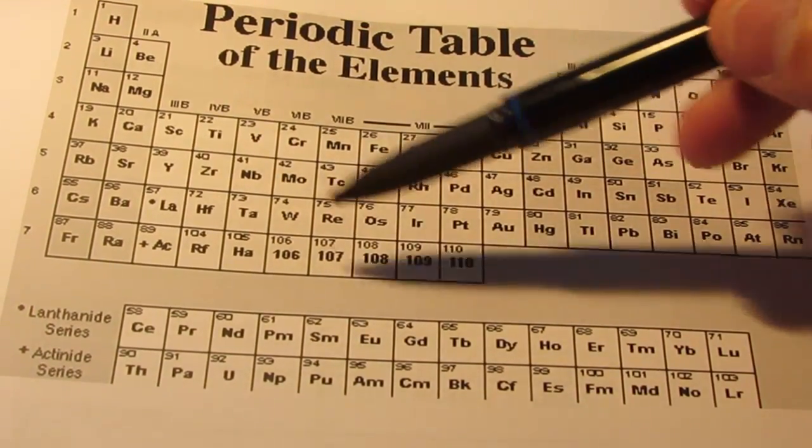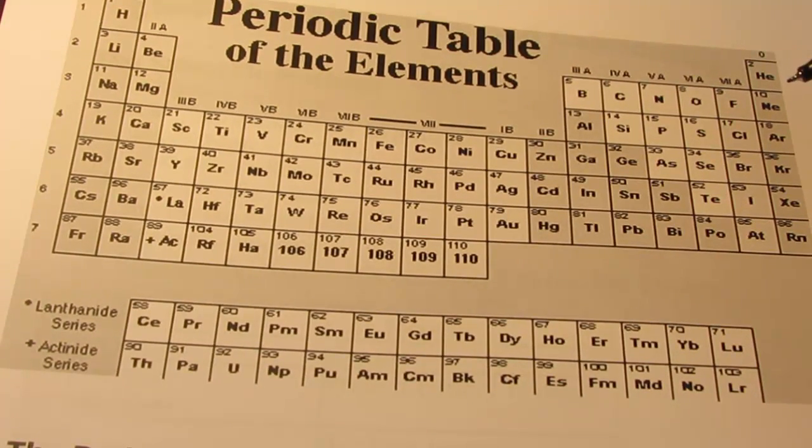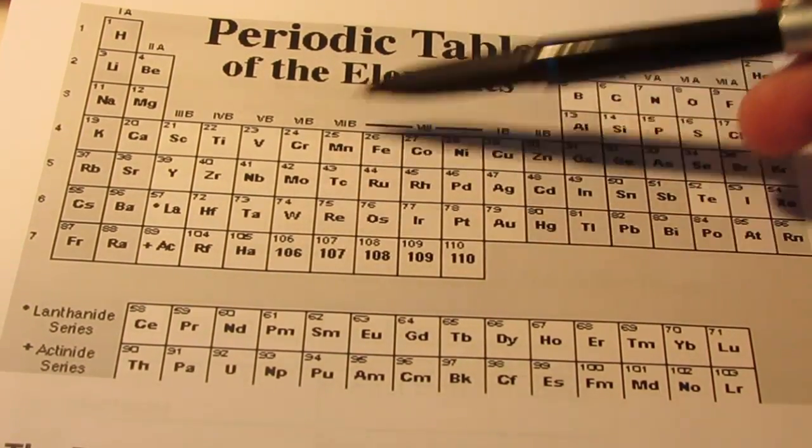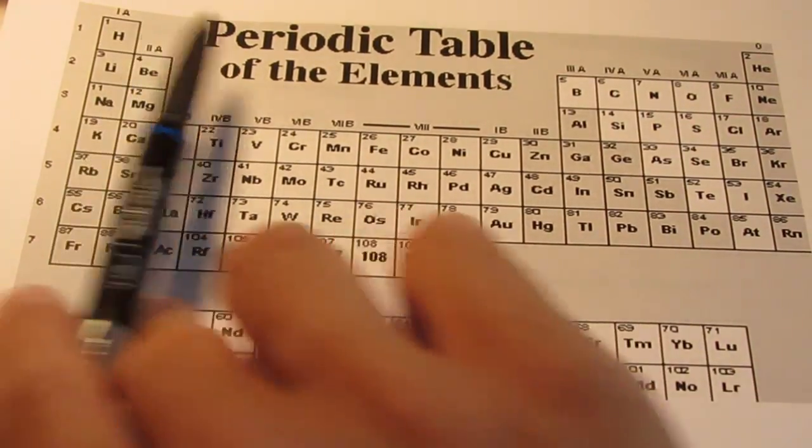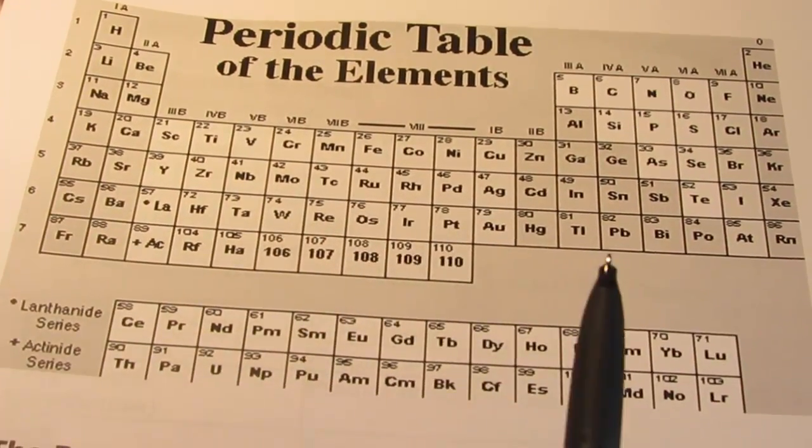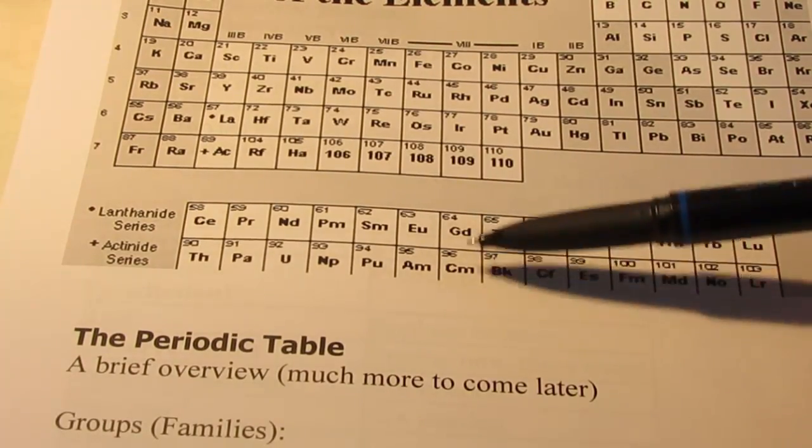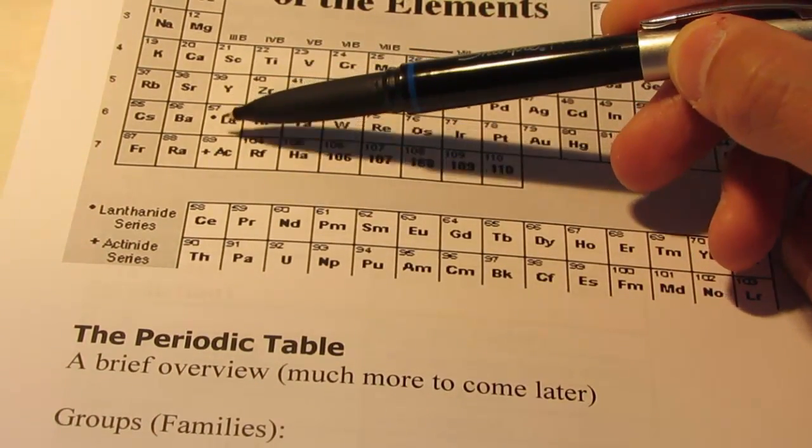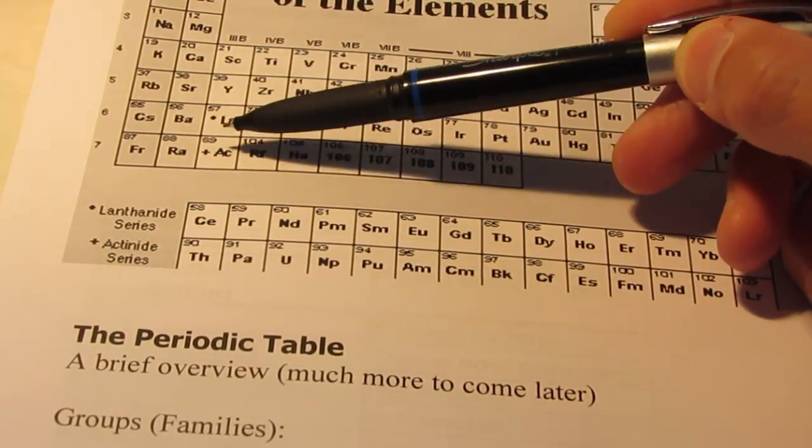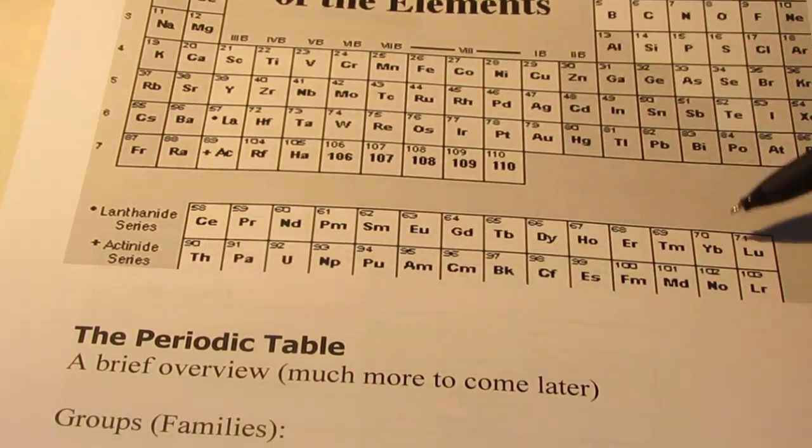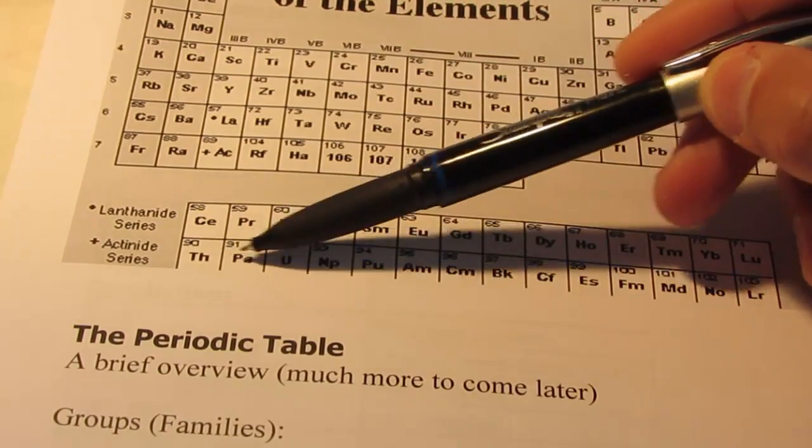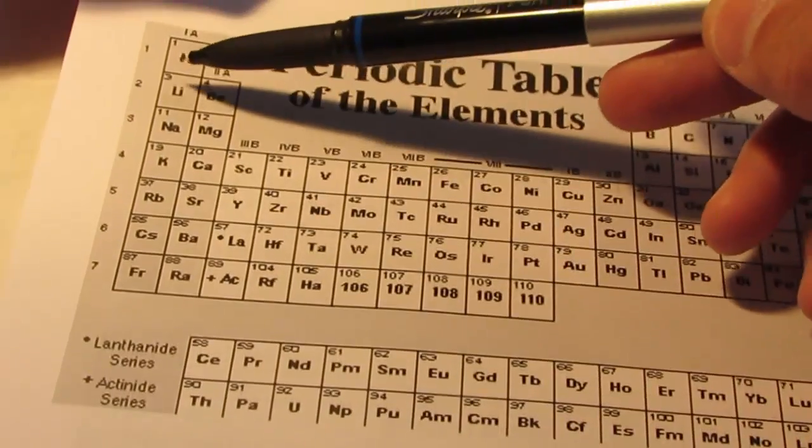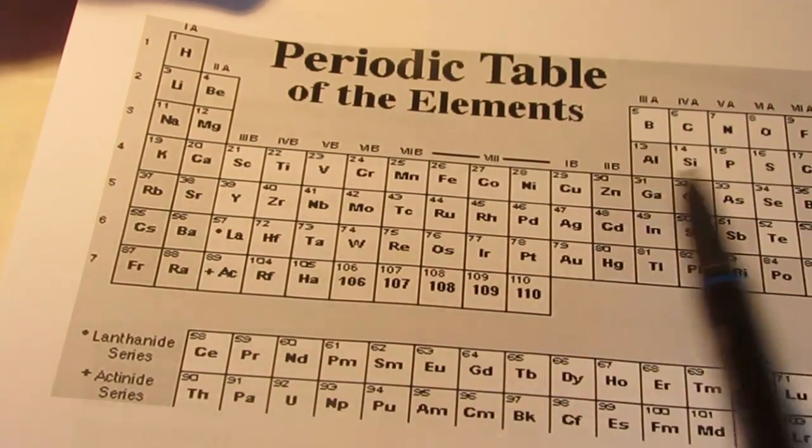Here is a copy of the periodic table. It's one version of which you will see many. You'll notice that there are 18 columns on the periodic table and that there are seven rows on the periodic table. Now you might count these two as individual rows, but in reality these two rows here fit in these two squares. Don't worry about why for right now. So we have seven rows and 18 columns.